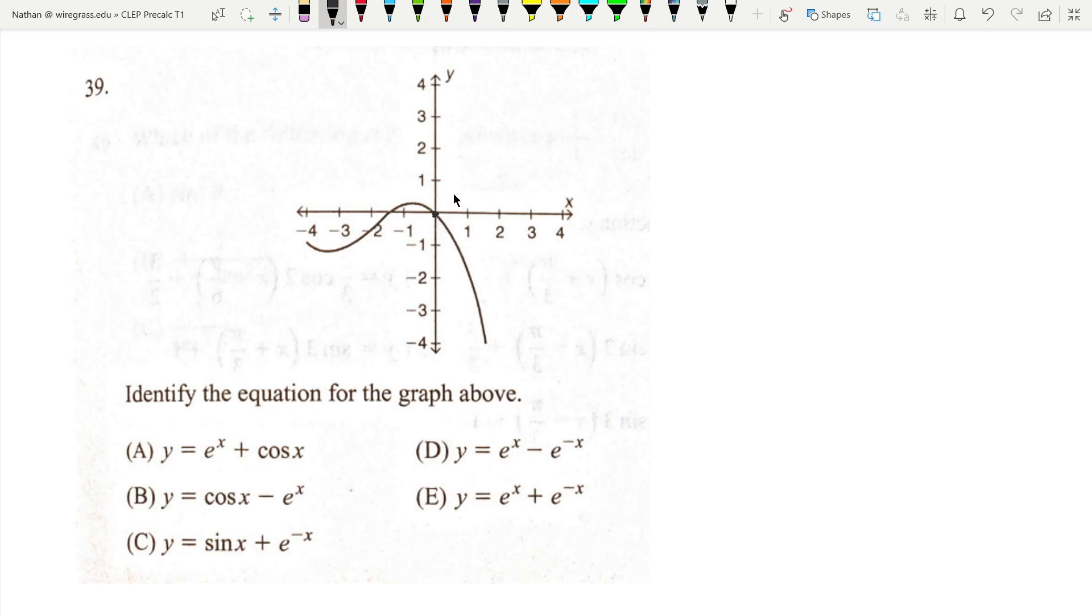First off, we can see here that we have a point at the origin. So that's going to be our first test to see what these are. e^0 is 1, cos(0) is 1, 1 plus 1 is 2. It does not hit at 2, so it cannot be A.